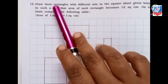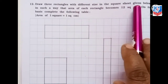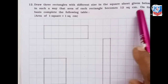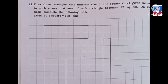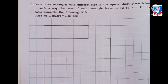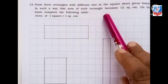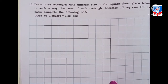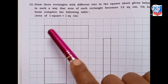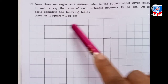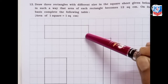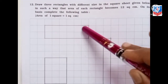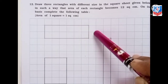Next question: draw 3 rectangles with different sizes on the square sheet such that the area of each rectangle becomes 12 square centimeter. First rectangle: length 6, breadth 2. Area equals 6 into 2, which is 12 square centimeter. Second rectangle: length 4, breadth 3. Area equals 4 into 3, which is 12 square centimeter.